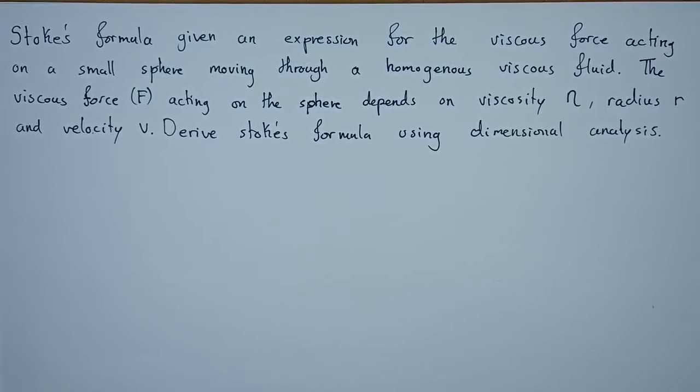Stokes formula gives an expression for the viscous force acting on a small sphere moving through a homogeneous viscous fluid. The viscous force acting on the sphere depends on three things: viscosity η, radius r, and velocity v. How can we derive Stokes formula using dimensional analysis?